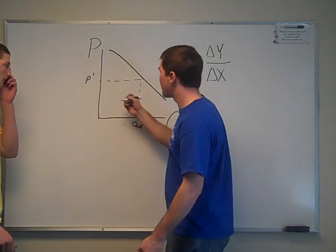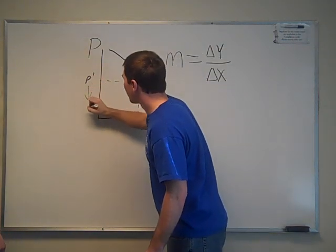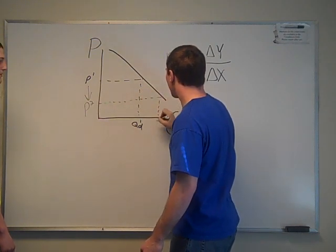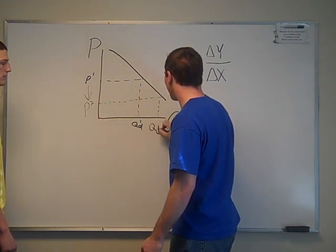Now let's say, on that same product, we get a price reduction, P2. That would in turn give us a higher quantity demanded, QD2.